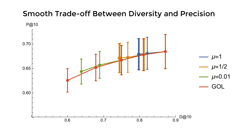Conducting experiments on Netflix and Movielens data, we show that a smooth tradeoff between precision and diversity can be achieved by varying the threshold we set for what makes an acceptable recommendation. Moreover, we show that our approach is better at maximizing diversity as measured by the Gini index, coverage, or the entropy of the degree distribution, while maintaining accuracy when compared with previous approaches.